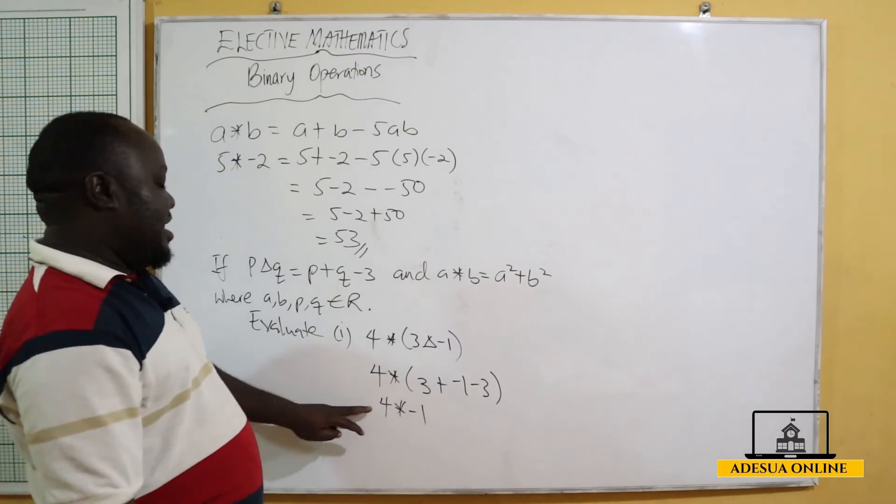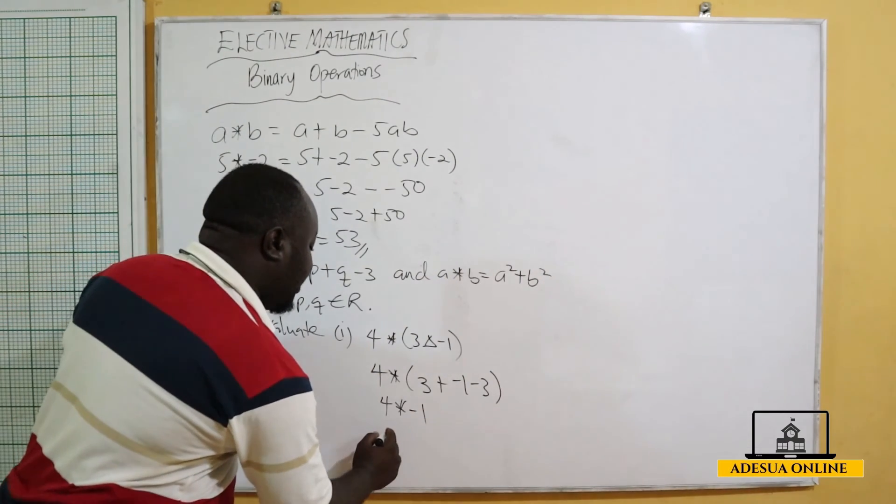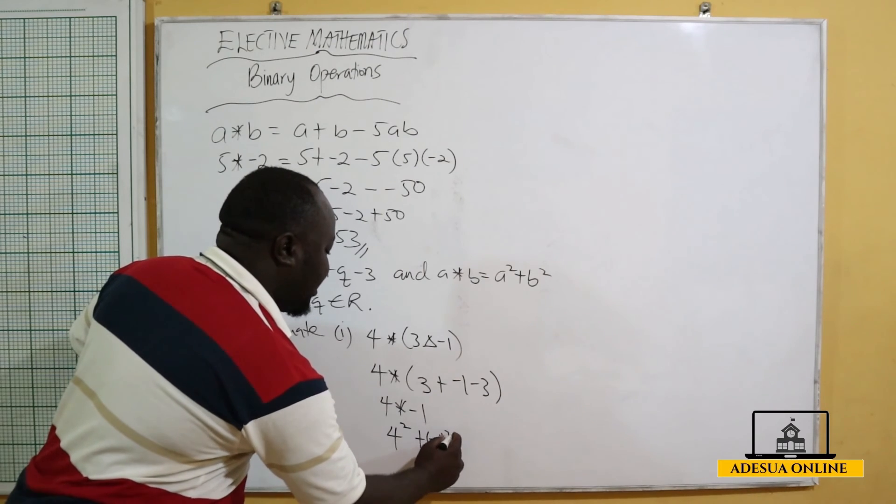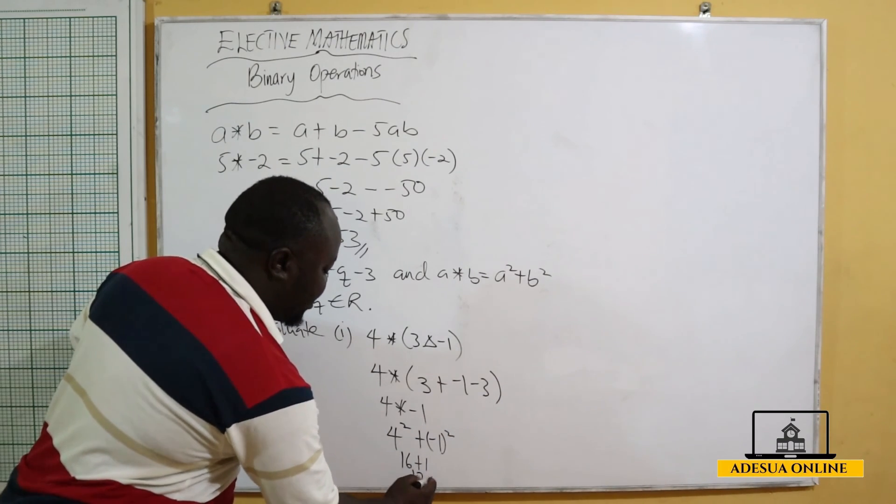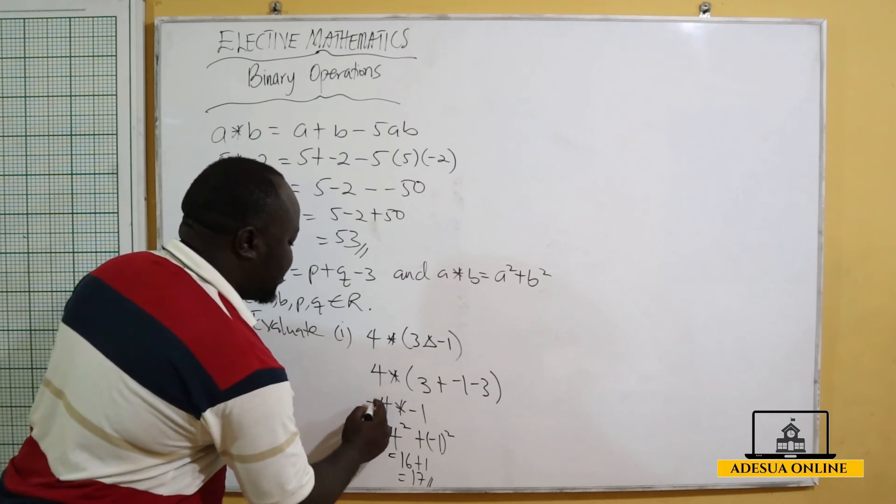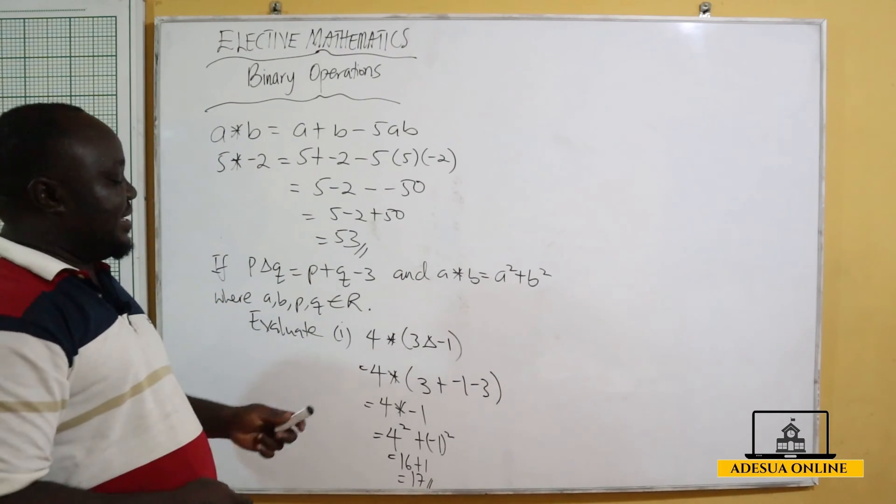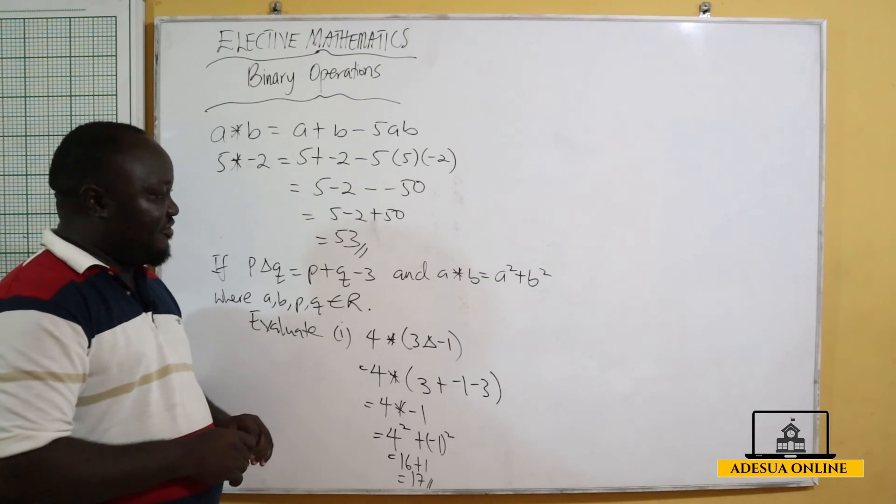Then we go for 4 operation negative 1. This is standing for star, so this will give me 4 squared plus minus 1 squared, which will be 16 plus 1, which will be equal to 17. So my answer is 17. So 4 star 3 triangle negative 1 is equal to 17.